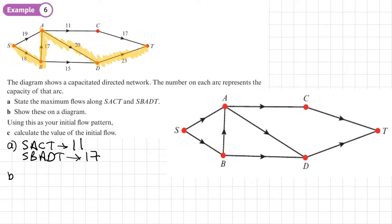Part B, show these on a diagram. So we're just going to write that information on here. So here are my capacities. Now, route SACT had a maximum flow of 11. So I'll put that down here, that goes in the circle. SACT 11. And then SBADT had a maximum flow of 17. So SB, 17 there.